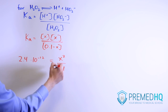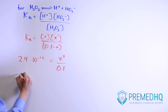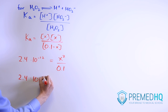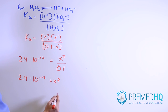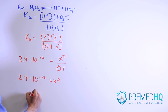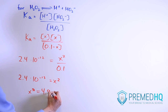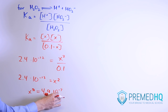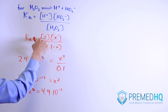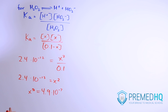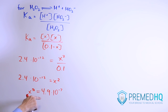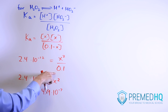Multiplying both sides by 0.1 gives us 2.4 × 10⁻¹³ = X². With a calculator, solving that gives X = 4.9 × 10⁻⁷. Remember that X is equal to the proton concentration, so we'll be able to solve for pH — as long as we can prove this X value is less than 5% of the initial concentration.